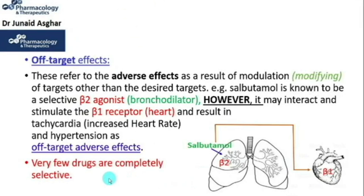Very few drugs are completely selective. Salbutamol is not entirely beta-2 selective, which means salbutamol can additionally bind and stimulate the beta-1 receptors. This is why salbutamol can lead to off-target side effects such as tachycardia and hypertension.